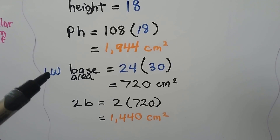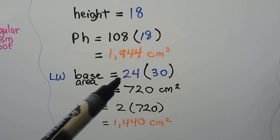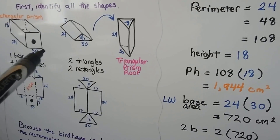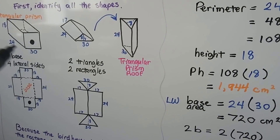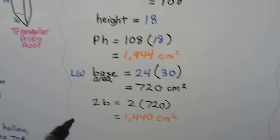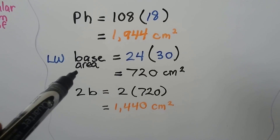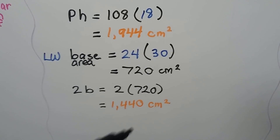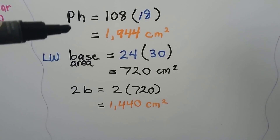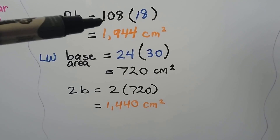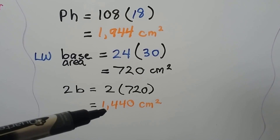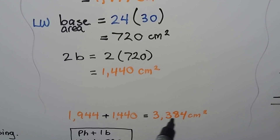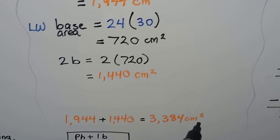The base area is length times width: 24 times 30, which gives us 720 centimeters squared. We do pH plus 2B: 1,944 plus 2 times 720, which is 1,944 plus 1,440. That gives us 3,384 centimeters squared for the rectangular prism.